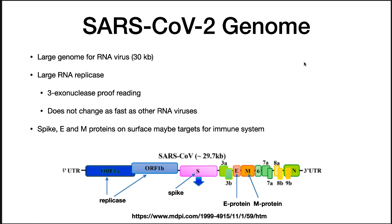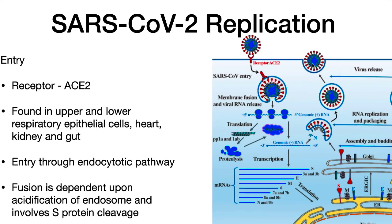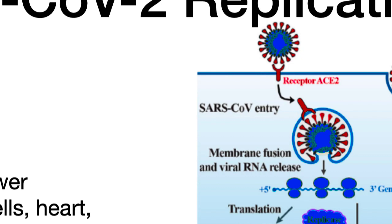This also means that this RNA virus does not mutate as rapidly as other RNA viruses. The spike, E, and M proteins may serve as targets for the immune response. SARS-CoV-2 enters cells by attaching to the ACE2, the angiotensin converting enzyme 2 receptor. These receptors are common on epithelial cells that line the lung, heart, kidney, brain, and gut, thus accounting for the targets of the virus.